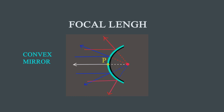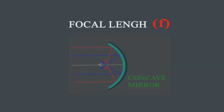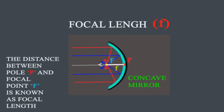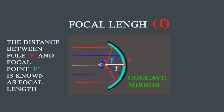Now for a very interesting term: focal length. We have already learned reflection in convex mirror. P is the pole, that is the geometric center of the convex mirror, and F is the focus. The distance between the pole and the focus is known as focal length and it is denoted as small f. Focal length means the distance between pole P and focal point F. The same applies to concave mirror — the distance between focus and pole is the focal length.